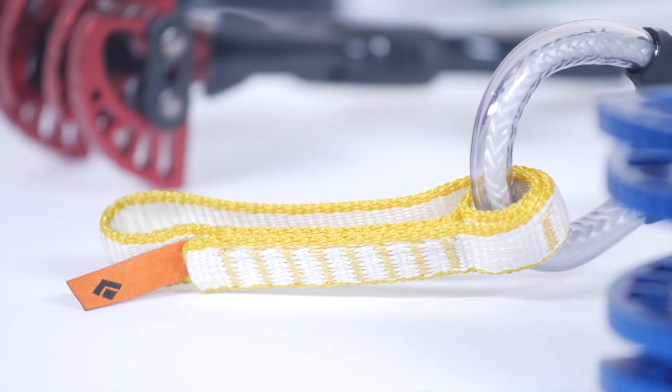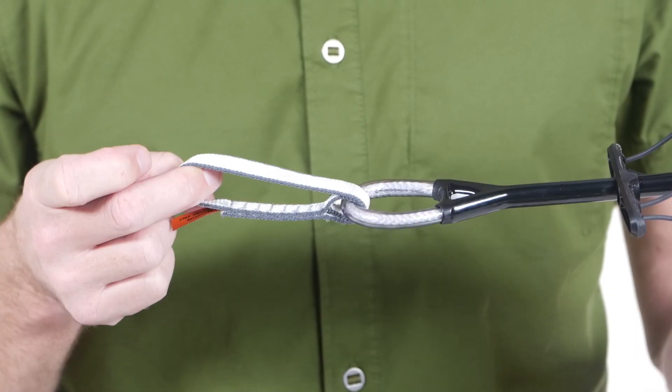Finally, a low-profile 14mm Dyneema sling reduces bulk and keeps your rack weight down.